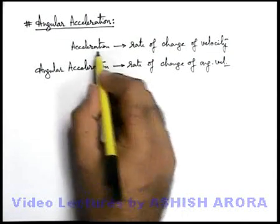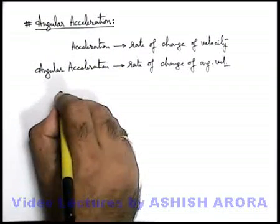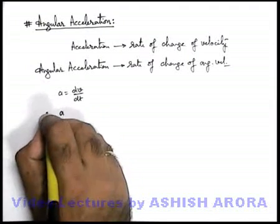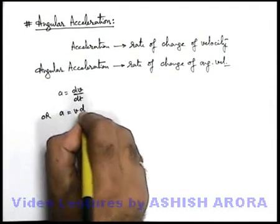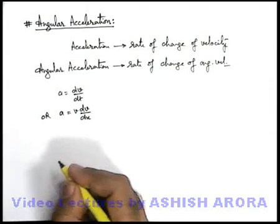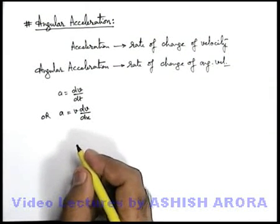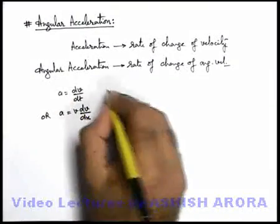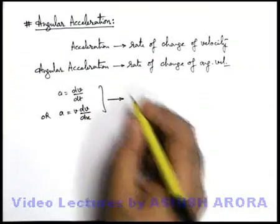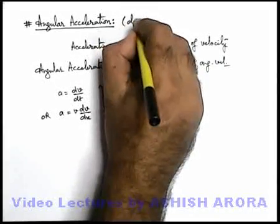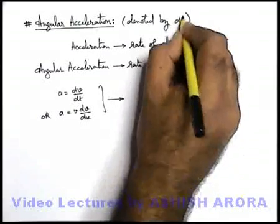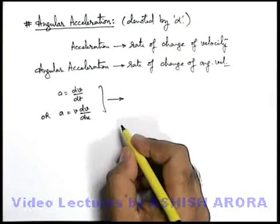As far as acceleration is concerned, linear acceleration can be written as dv/dt, or it can also be written as v·dv/dx. This we have covered in kinematics. In the same manner, when we talk about circular kinematics or angular kinematics, these relations will transform in a different manner. Angular acceleration is denoted by alpha — this is the letter alpha which is used to denote angular acceleration.